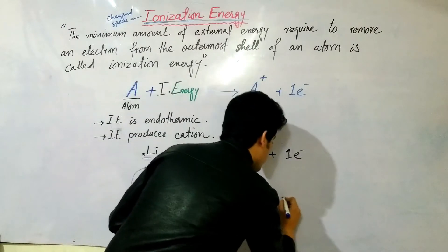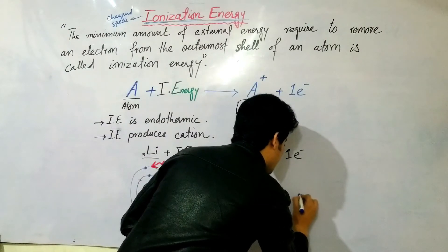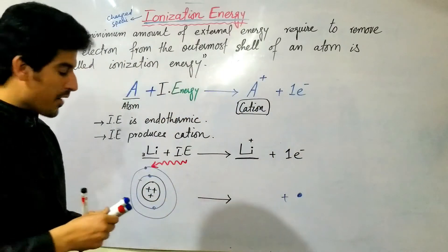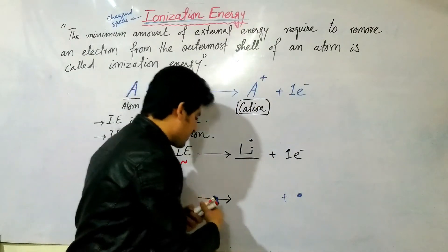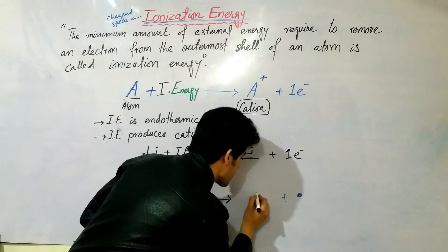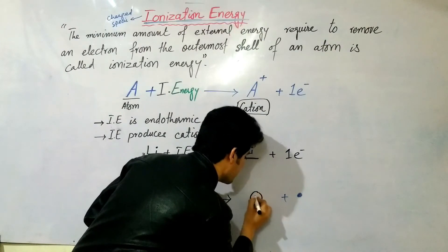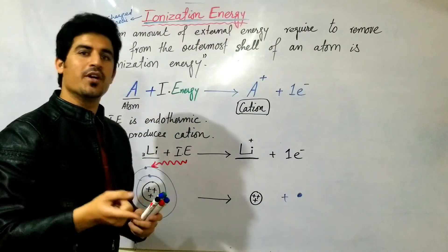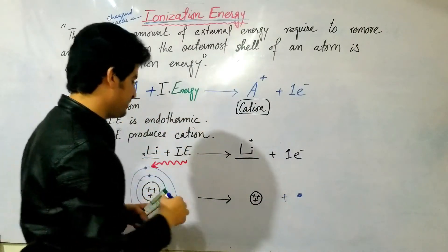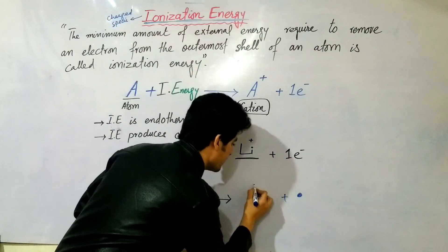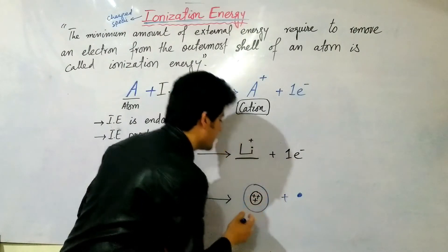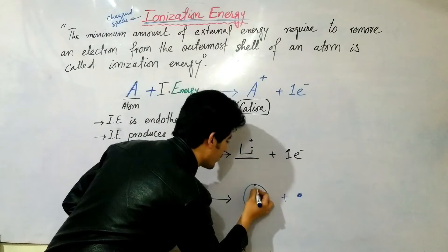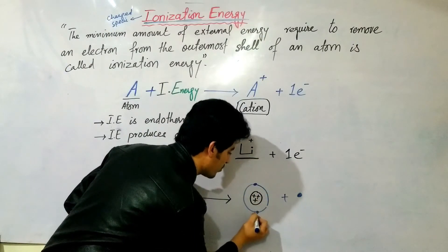When ionization energy is applied, an electron is removed. We know that when one electron comes out of an atom, it becomes a cation. The lithium atom originally had three electrons. After one electron is removed, how many remain? Two electrons remain.